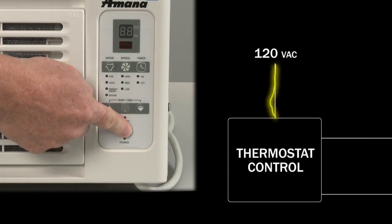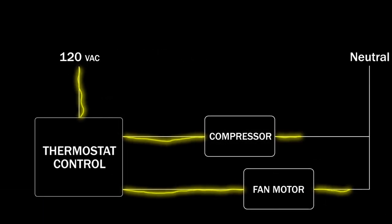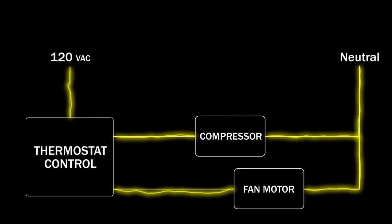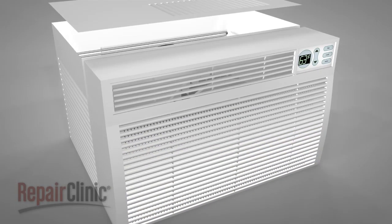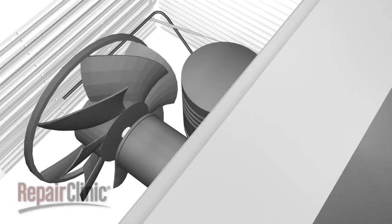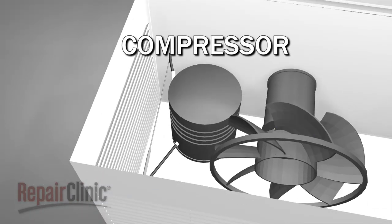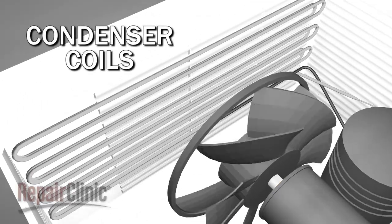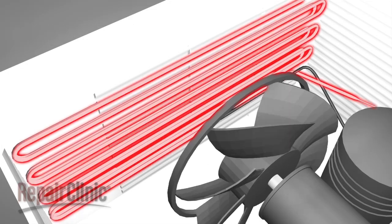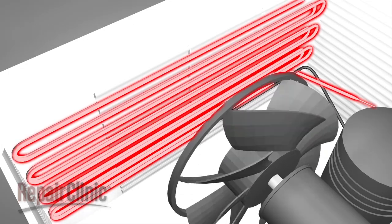When you switch the air conditioner on, the thermostat control sends 120 volts of alternating current to the compressor and the fan motor. The compressor acts as a pump, compressing refrigerant in gas form into the condenser coils, located near the back of the unit, where the gas is condensed into a hot liquid. The condenser coils dissipate the heat as the liquid travels through them.